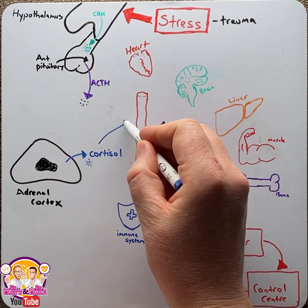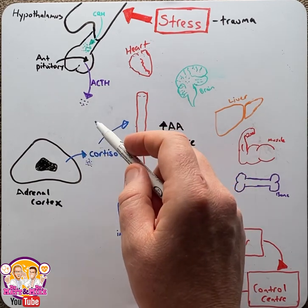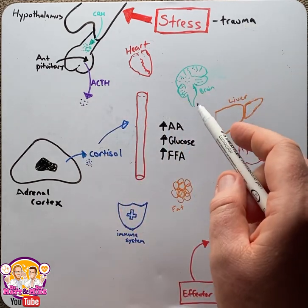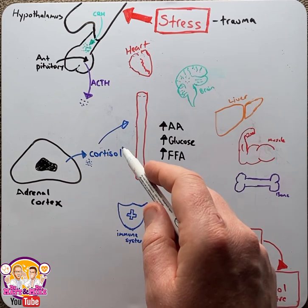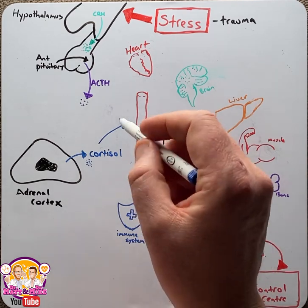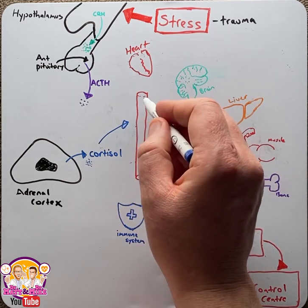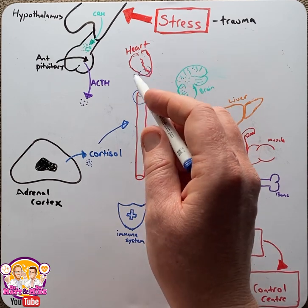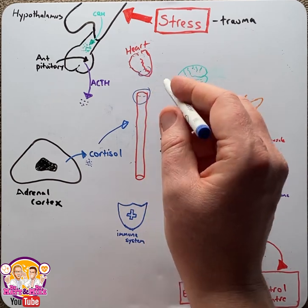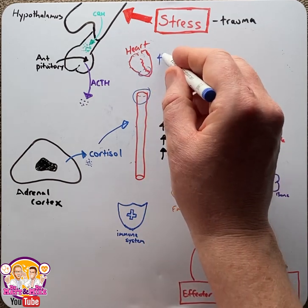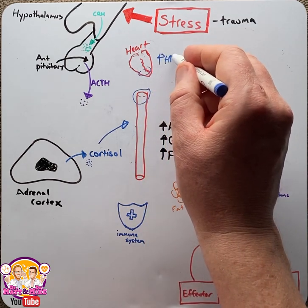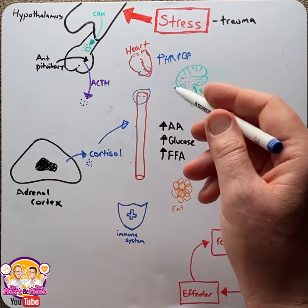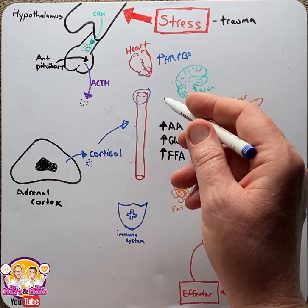Once cortisol enters the bloodstream, it will do many things to mitigate the original stressor. Let's go through a few of the most important effects. Cortisol will sensitize arterioles and myocardium to adrenaline, therefore increasing heart rate and blood pressure to deliver more blood centrally in the body.